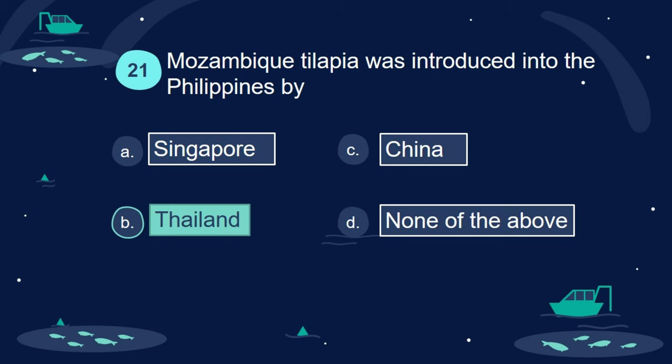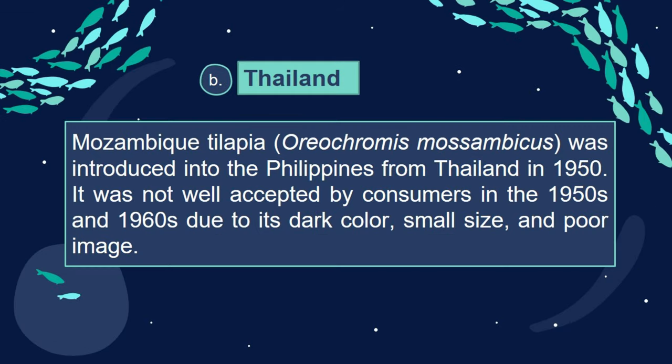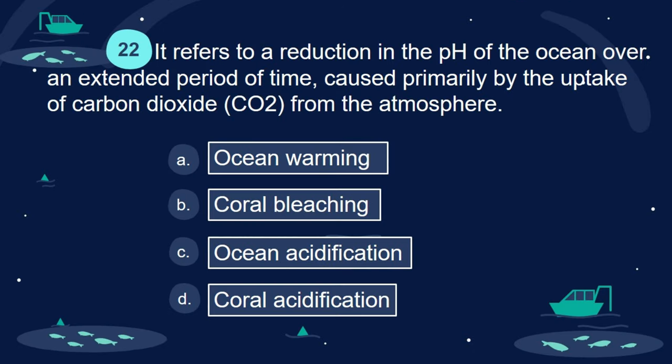Answer: B. Thailand. Mozambique tilapia was introduced into the Philippines from Thailand in 1950. It was not well accepted by consumers in the 1950s and 1960s due to its dark color, small size, and poor image.